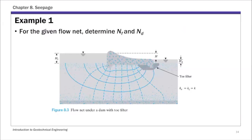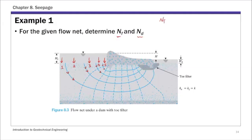Example one is a simple example using the flow net underneath a concrete dam hydraulic structure. For this given flow net, let's count Nf — the number of flow channels — and Nd — the number of potential drops from upstream to downstream. For Nf, the solid lines are flow lines, and each strip between two adjacent flow lines is a flow channel. We have one, two, three, four, five — so Nf equals five.